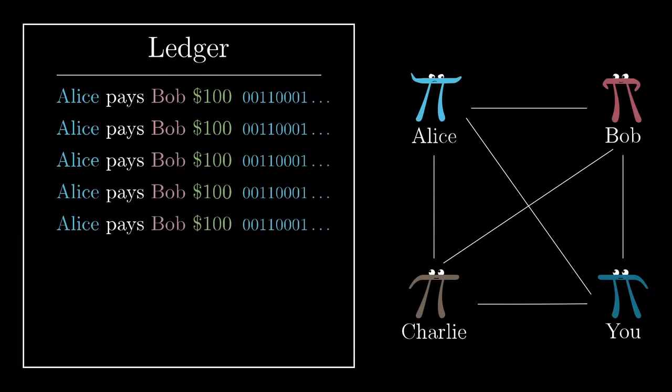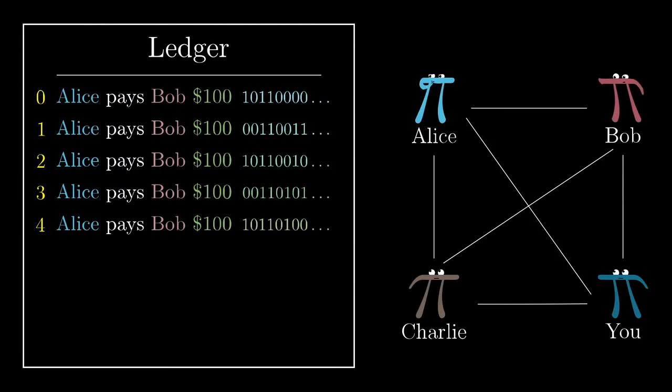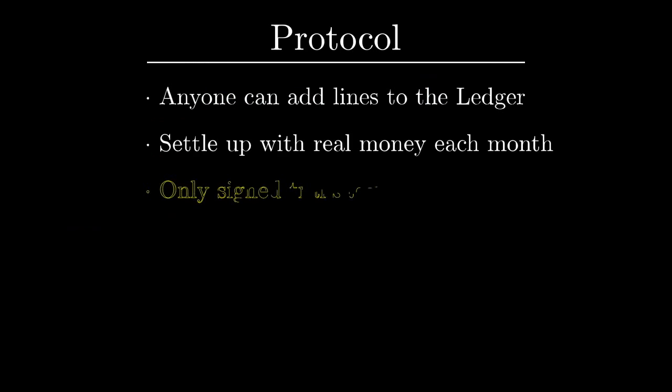To get around this, what we do is make it so that when you sign a transaction, the message has to also include some sort of unique ID associated with that transaction. That way, if Alice pays Bob $100 multiple times, each one of those lines on the ledger requires a completely new signature. Alright, great. Digital signatures remove a huge aspect of trust in this initial protocol.